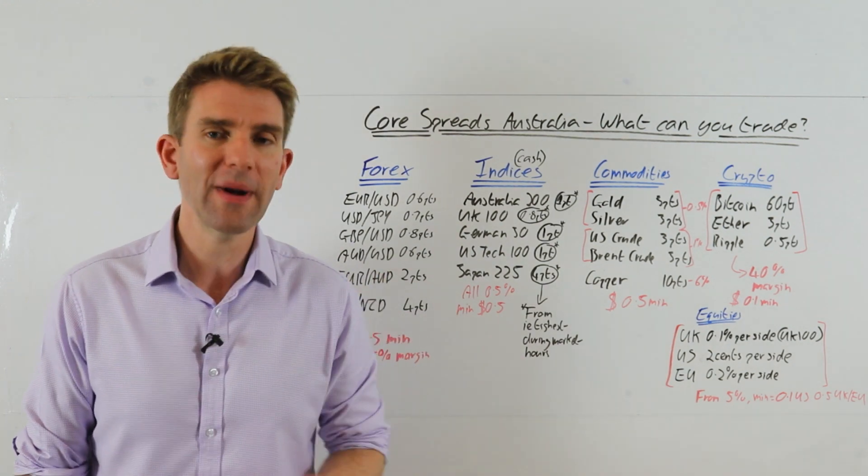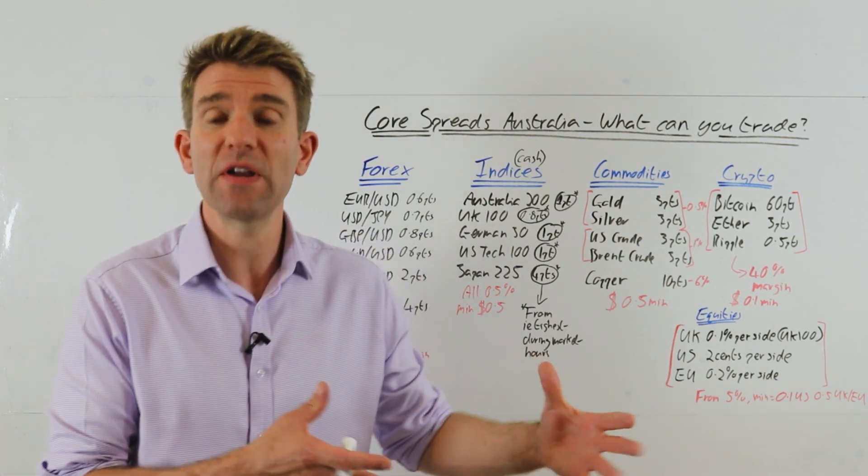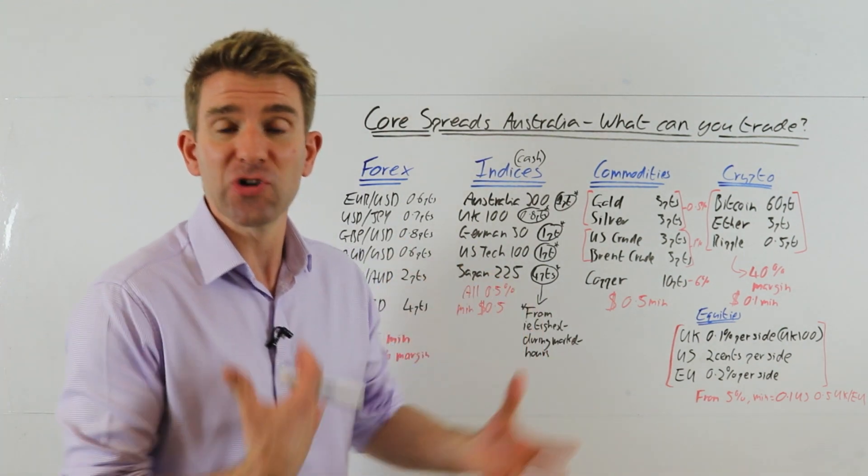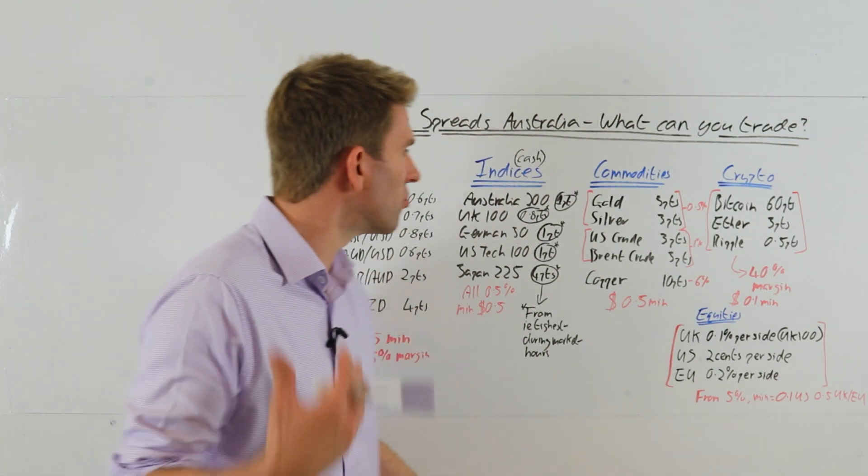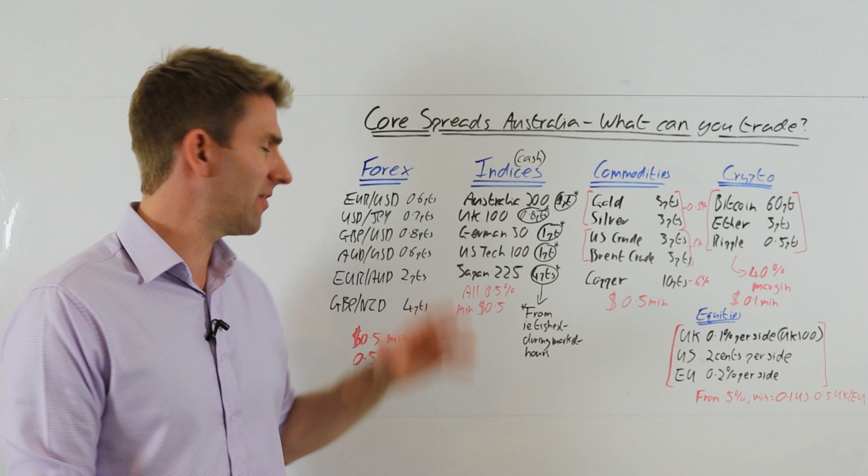These are all 0.5% margin, so good margins, and the minimum is 0.5 dollars. So you can trade a small amount, which is great if you're just starting out trading, or if you've got multiple positions, or if you're holding positions for a longer period of time and just don't want to have that much at risk. You can trade a small amount, just get used to it and get into the whole groove of things.